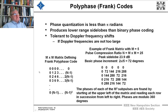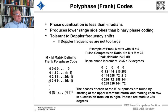And then we get on to even more complicated codes — phase quantizations less than pi radians — and they introduce even lower range side lobes than binary phase coded. They're tolerant to Doppler frequency shifts if the frequencies aren't too great. Here's an M by M matrix defining the Frank polyphase code, where you read off the phases. The phases of up to M squared subpulses are read starting from the upper left of the matrix, reading each row in succession from left to right, with phases modulo 360 degrees.